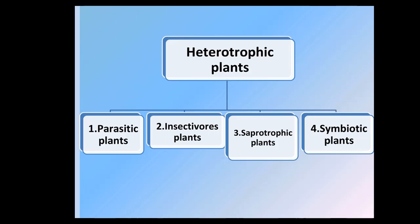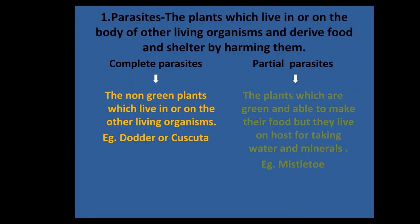First, parasitic plants. Parasites are plants which live in or on the body of another organism and derive food or shelter or both by harming them. You must remember to write 'harming them' because parasites harm the organisms on which they live. The organisms on which parasites live are called the host.